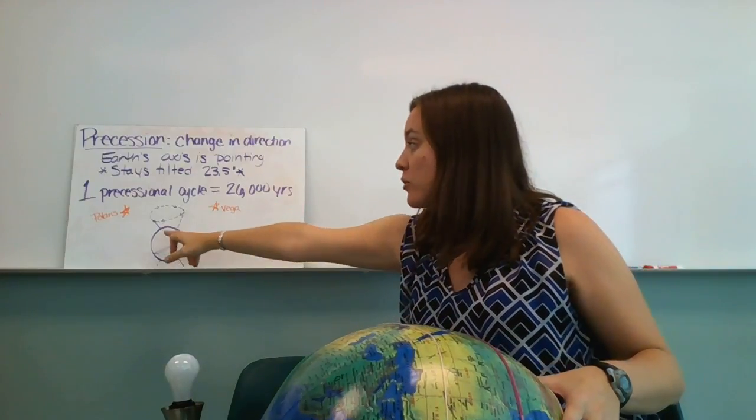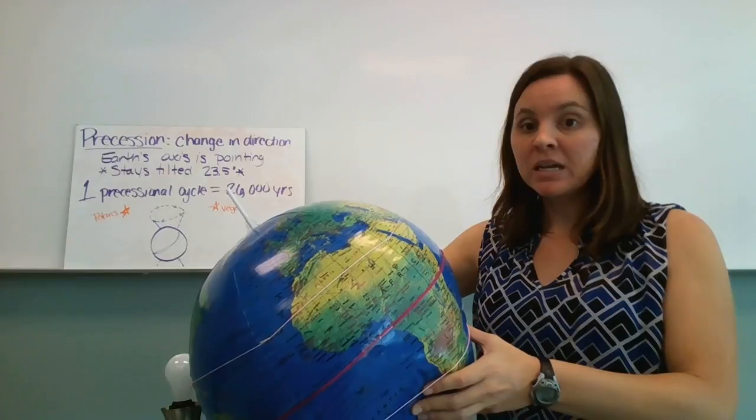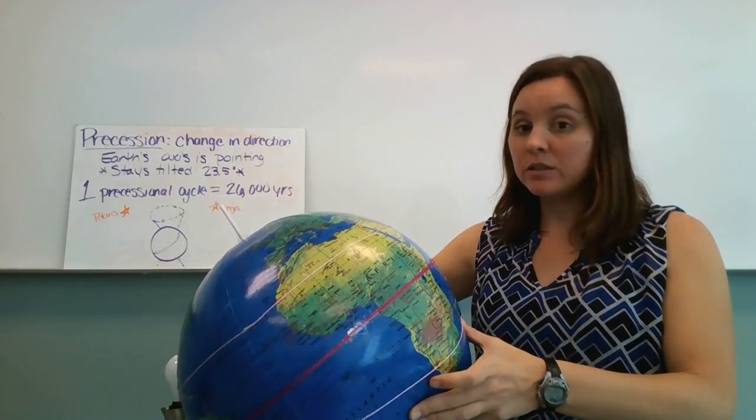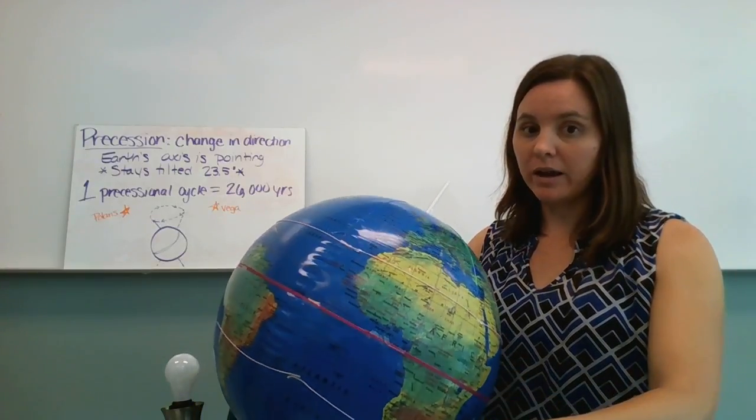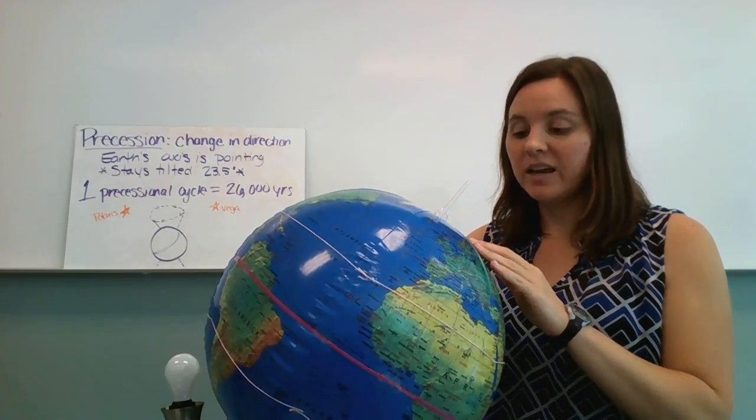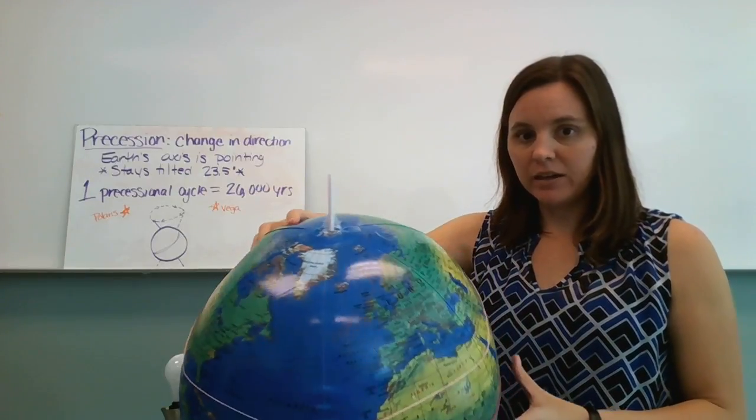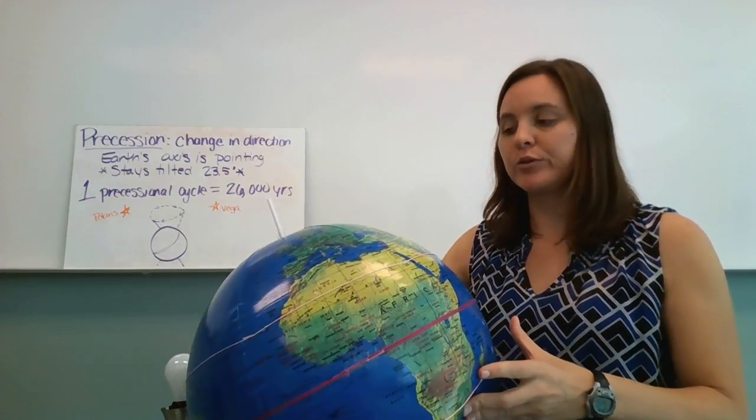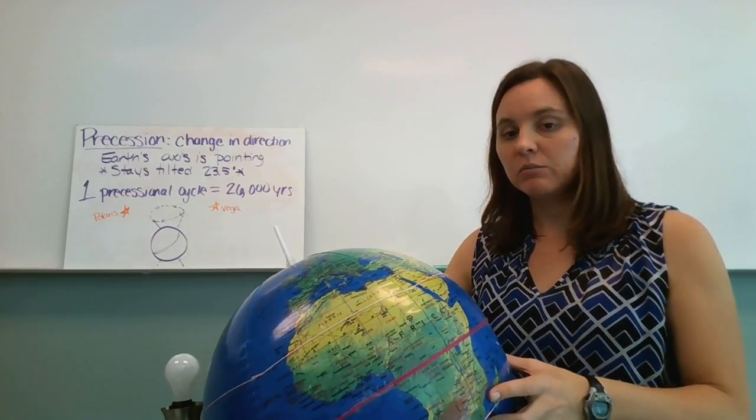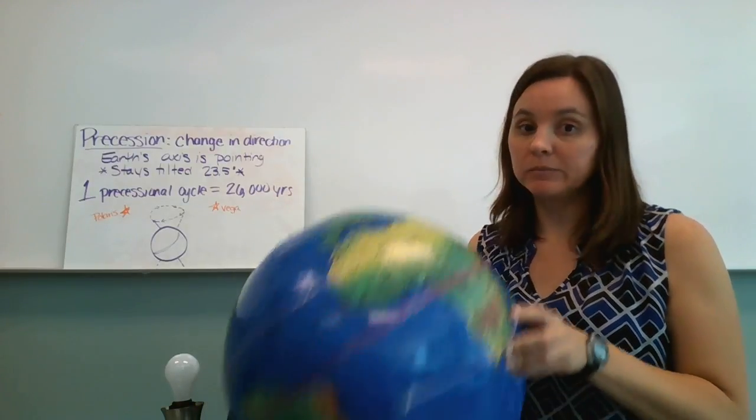So right now our north star is Polaris, so that means that our north pole is pointing towards Polaris. In about 13,000 years, it will wobble its way around, or rotate its way around, and our new north star will be a star called Vega. And then in another 13,000 years after that, it will make its way back, and our north star will be Polaris again. So it's just the change in direction that the earth's axis is pointing towards which star.